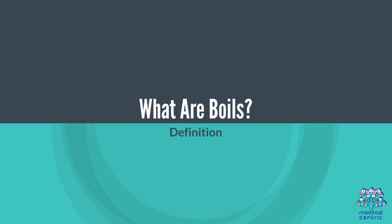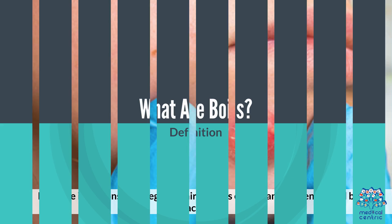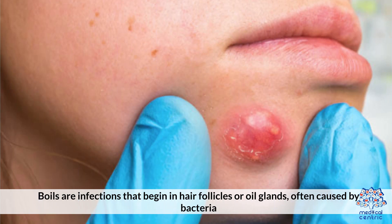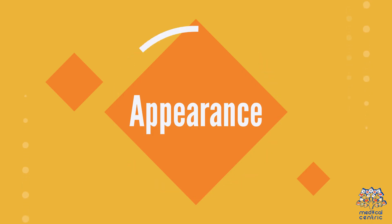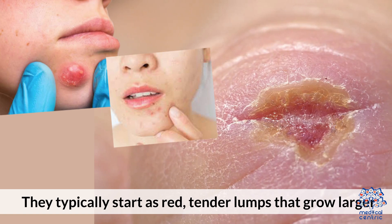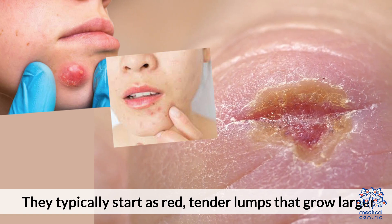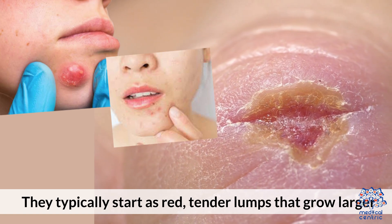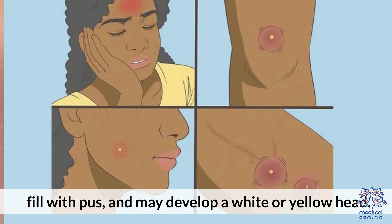What are boils? Boils are infections that begin in hair follicles or oil glands, often caused by bacteria. They typically start as red, tender lumps that grow larger, fill with pus, and may develop a white or yellow head.